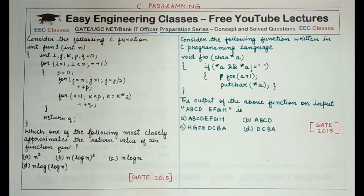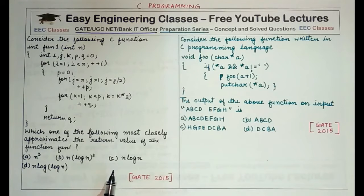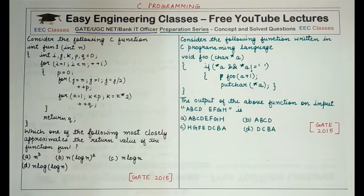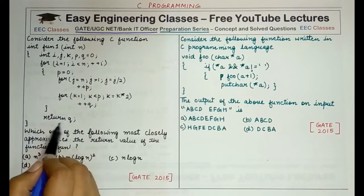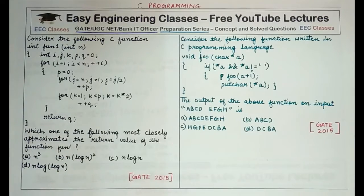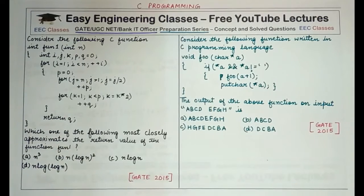The first for loop returns q. You have to determine which option most closely approximates the return value of the function fun1. The return value is q, and we need to find the value of q. It is not a very difficult question, so let's analyze how the different for loops work.